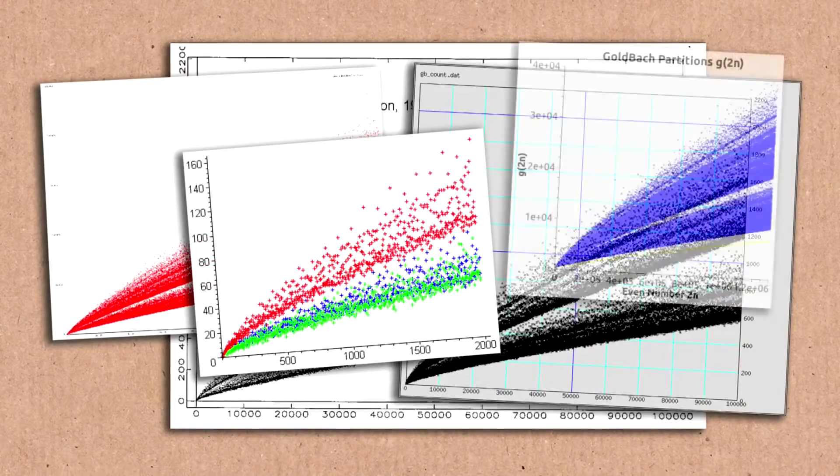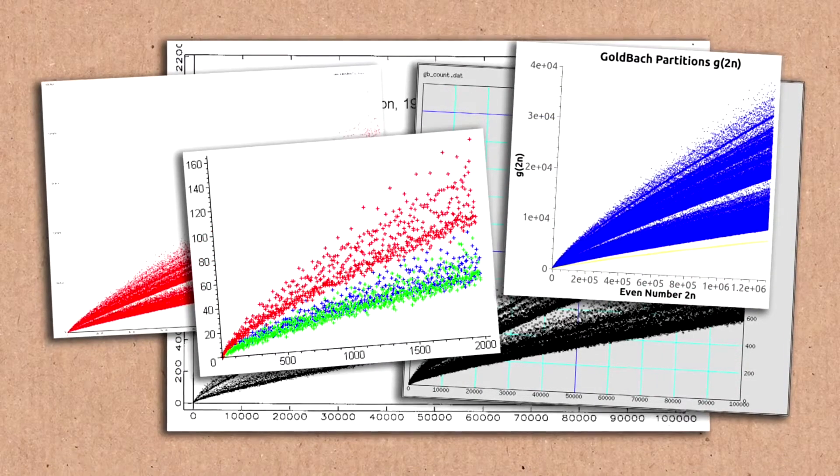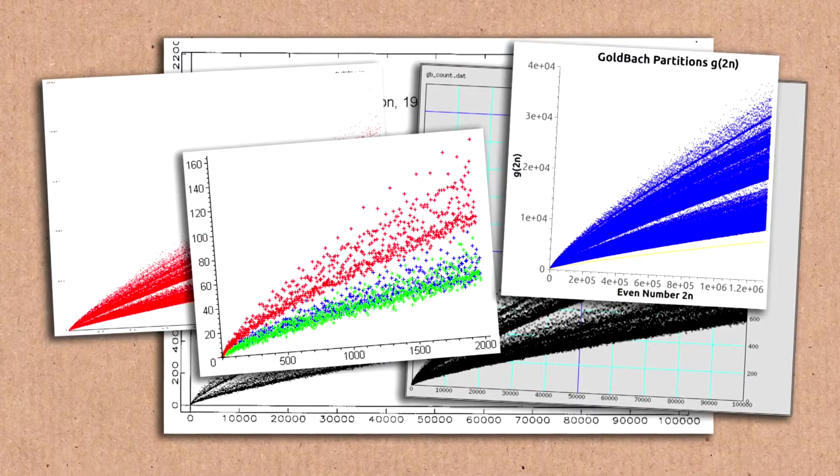But even the ones with the fewest ways, the number seems to grow pretty steadily. Do you ever get a really, really big, even number that has, like, only one way? Or is it always lots? No one has ever found such a thing, I think. It really just keeps growing. I don't know if there's any lower bound known or guessed.